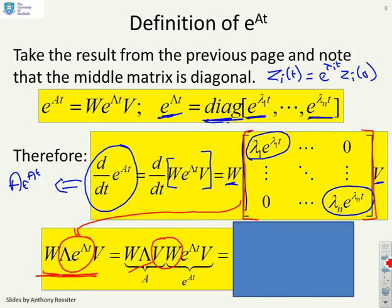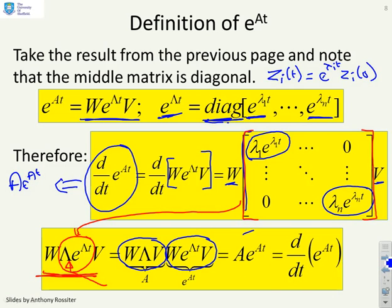And the reason I've done that is because now you can see that my expression can be separated out into two terms. A term which is the original A matrix and the one I'm looking for. And so you've now proved that if you do this diagonalization and you define e to the At as W e to the lambda t V, then the derivative result you want works. So we've shown that this result works if you use the eigenvector eigenvalue decomposition to define e to the At.